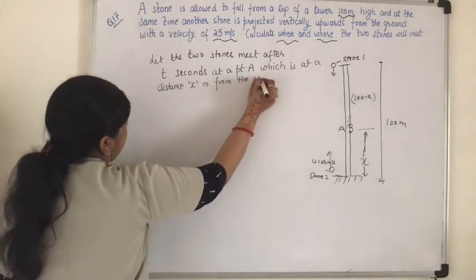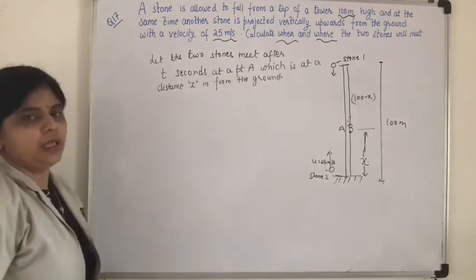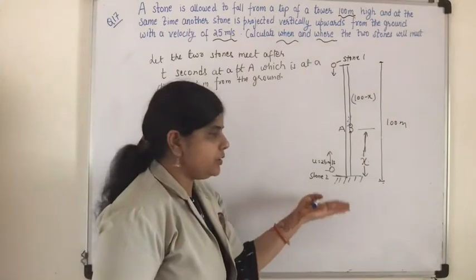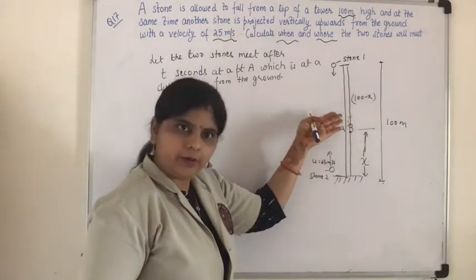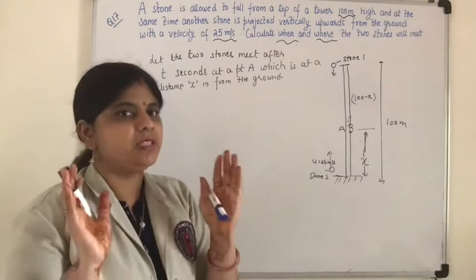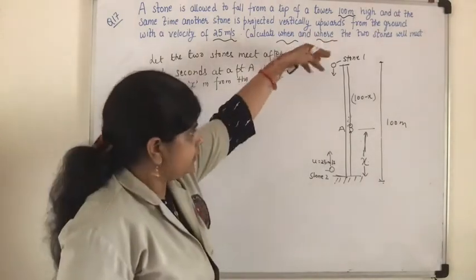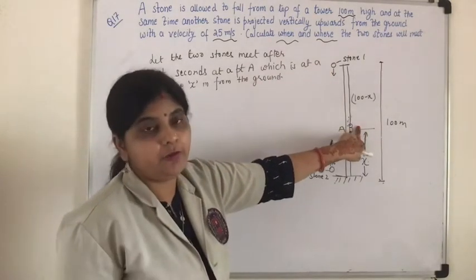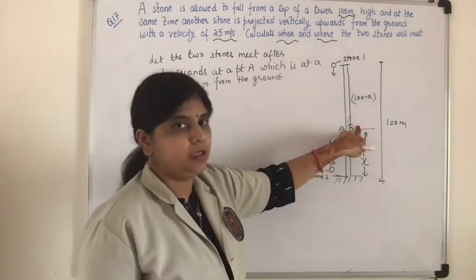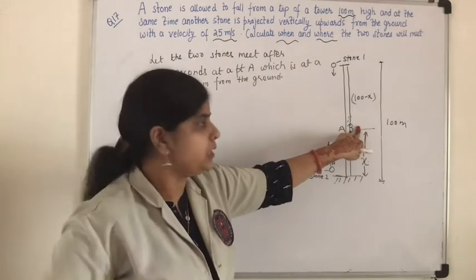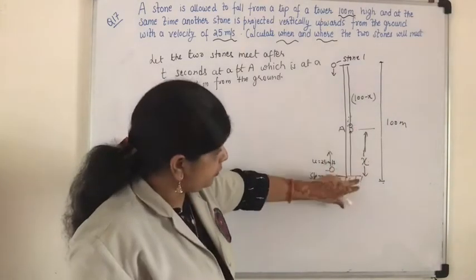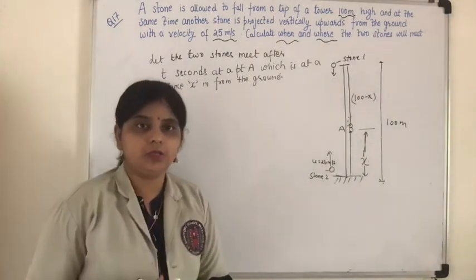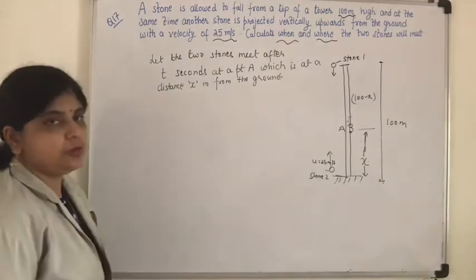How are we going to solve it? I hope the question is clear. One stone is dropped from a height of 100 meters; another stone is projected vertically upwards — both done simultaneously. One falls down, the other goes up, so they will meet at a particular point. We need to find after how many seconds they meet and at what distance.